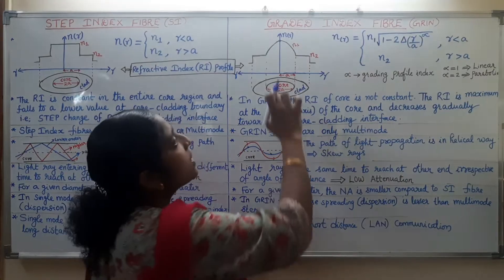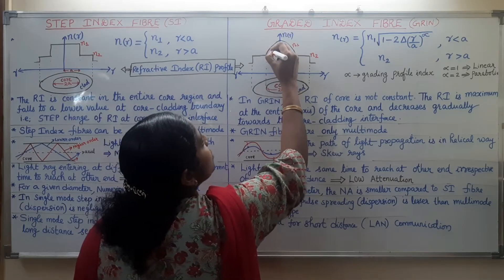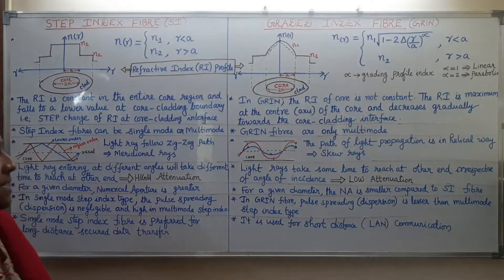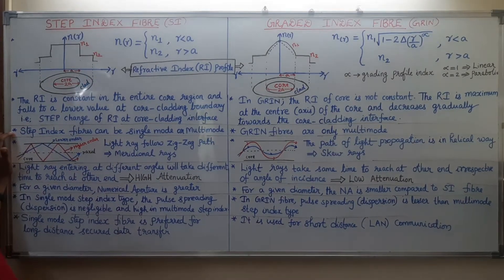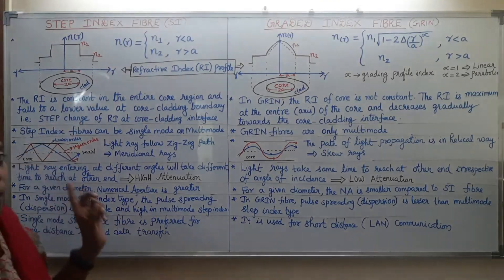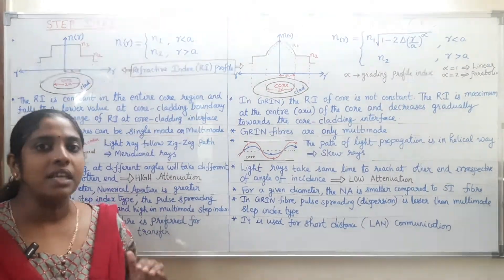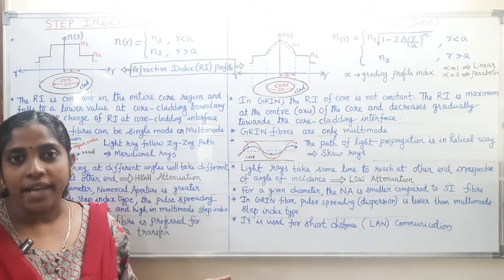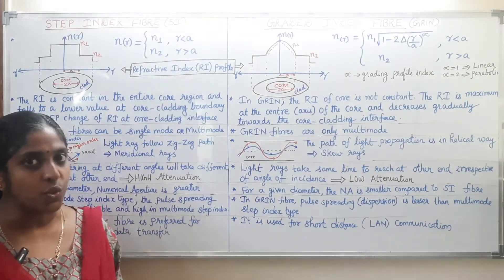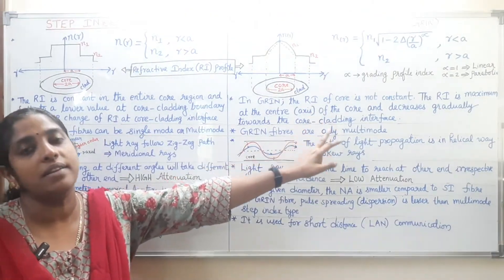If alpha equals 2, the variation of the refractive index is parabolic. If alpha equals 1, the variation is linear. In step index fiber, both single mode and multi-mode fibers are possible — step index single mode and step index multi-mode. Single mode fiber means only one light propagation path, while multi-mode fiber means multiple light rays can pass through. In graded index fiber, only multi-mode fibers exist.